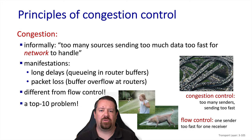It is important to remember that congestion control and flow control are two completely different things. Flow control is preventing the sender from overwhelming the receiver, whereas congestion control is preventing the senders from overwhelming the network.